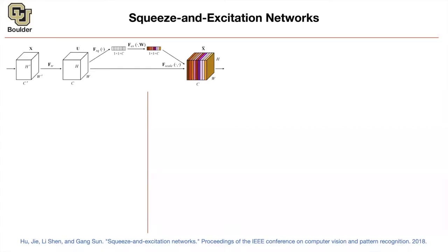There is this paper, Squeeze and Excitation Network, getting very good results in the ImageNet challenge. The idea is very neat. This is an overview of the paper in one plot: there is some transformation which takes a tensor and maps it into another tensor. There is the squeeze part, the excitation part, and a scaling part — applied after your convolution or any other operation. Remember, we are talking about blocks, not the entire network — just a building block you can insert into your neural network.